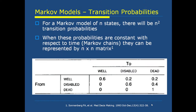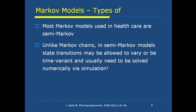For a Markov model of n states, there will be n² transition probabilities. When these probabilities are constant with respect to time, it is called a Markov chain, represented by an n×n matrix. Most Markov models used in healthcare are semi-Markov: unlike Markov chains, in semi-Markov models state transitions may vary or be time-variant and usually need to be solved numerically via simulation.